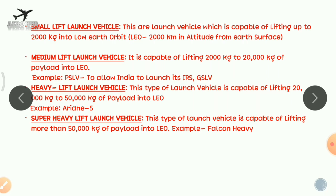The next classifications based on size are: small lift launch vehicles, capable of launching up to 2000 kilograms to Low Earth Orbit (LEO, which is 2000 kilometers from Earth's surface); medium lift launch vehicles, capable of lifting 2000 to 20,000 kilograms to LEO — an example being PSLV; heavy lift launch vehicles, capable of launching 20,000 to 50,000 kilograms — an example being Ariane 5 from Europe; and super heavy lift launch vehicles, capable of launching more than 50,000 kilograms of payload — an example being Falcon Heavy from the United States.